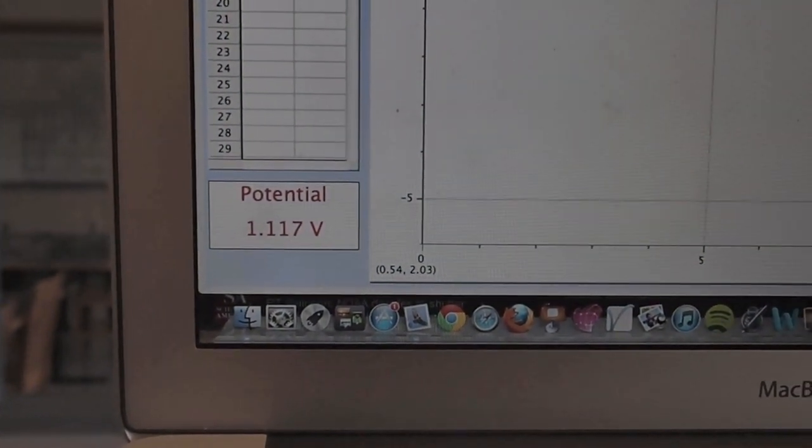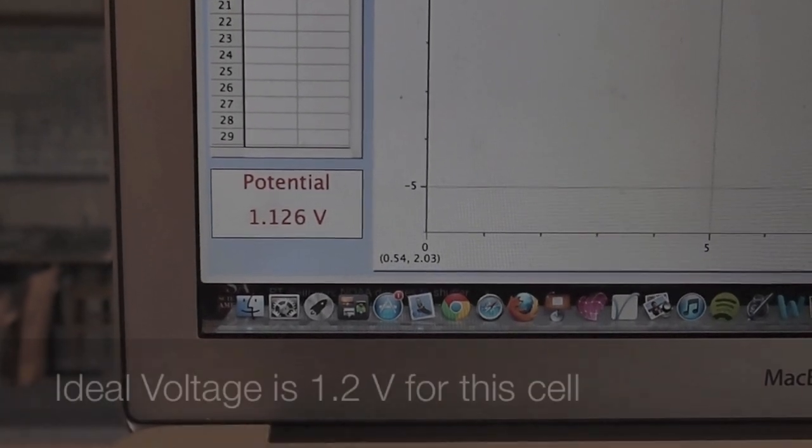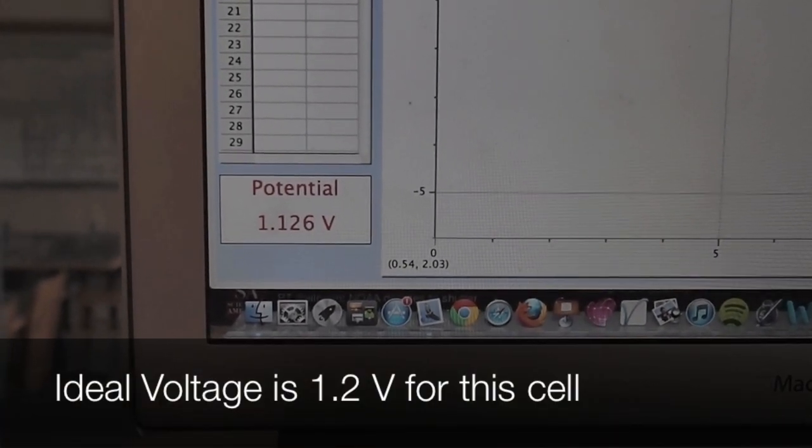So let's go back up here. And look at that. We've got a potential of around 1.12 volts. It might take a while for it to normalize or become steady.